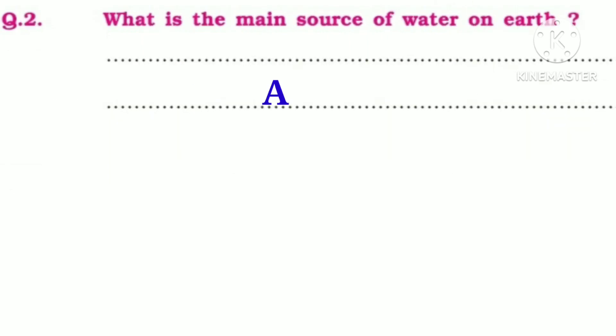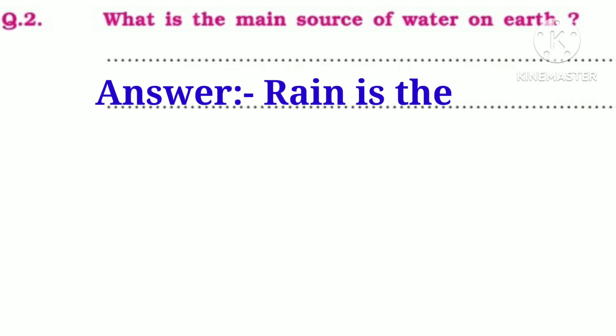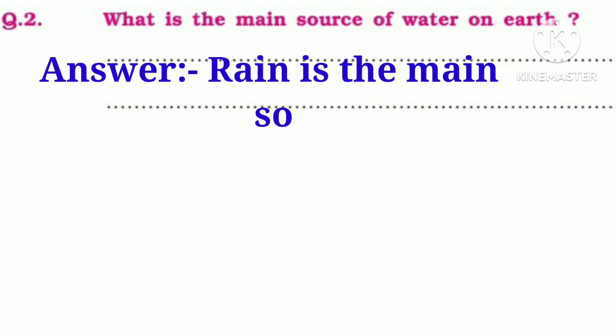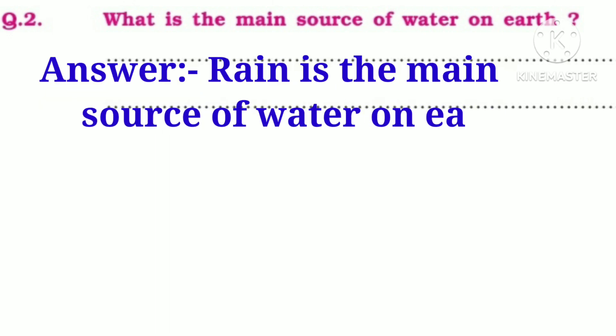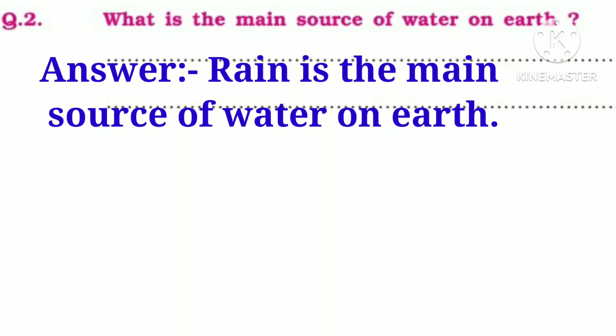What is the main source of water on earth? Answer: Rain is the main source of water on earth.